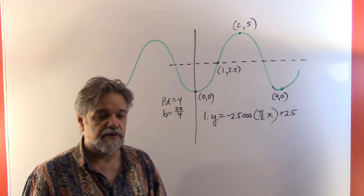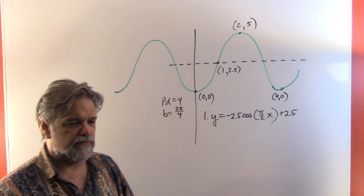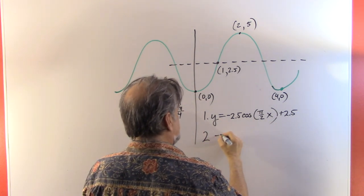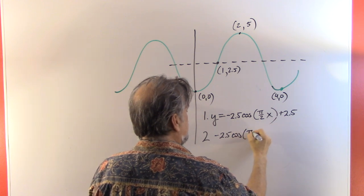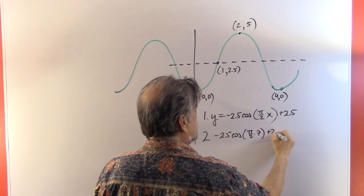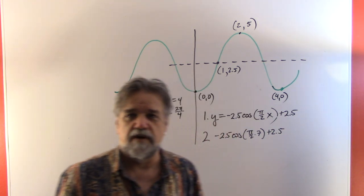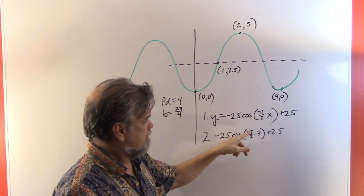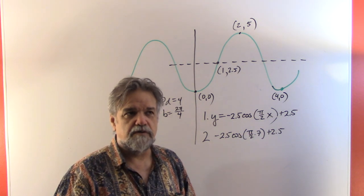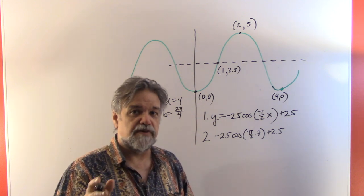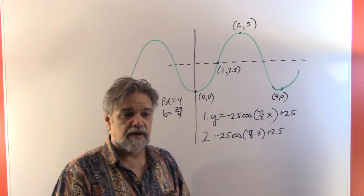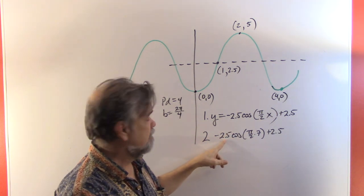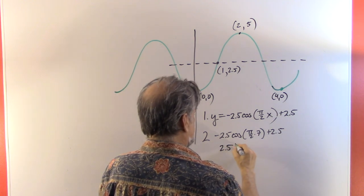For seven seconds, we plug in: negative 2.5 times the cosine of (π/2)(7) plus 2.5. That's the cosine of 7π/2, which is coterminal with 3π/2. The cosine of 3π/2 is zero, so this simplifies to 0 + 2.5, giving us 2.5 inches.